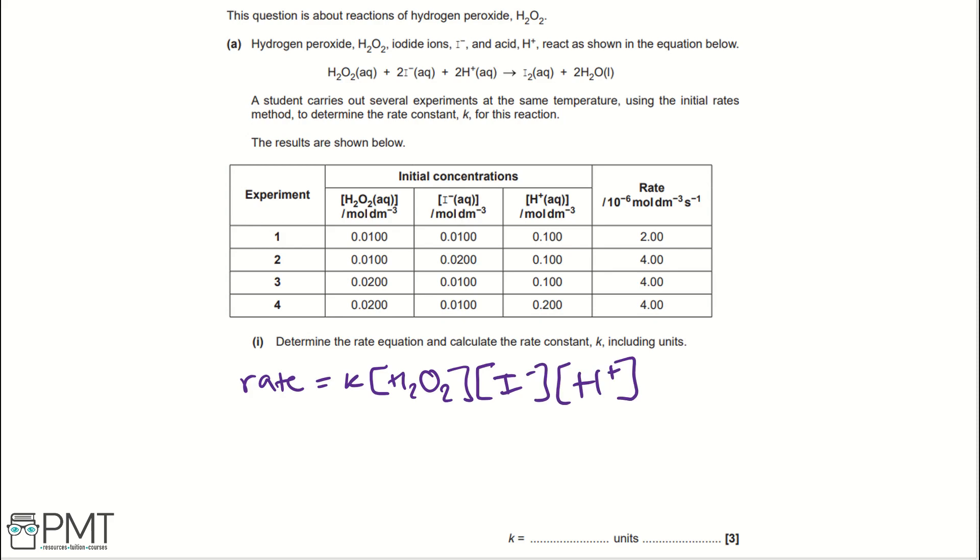We then need to establish which order each of these reactants are. To do this, we look for where one reactant has increased by a certain value and the others have stayed the same. Looking at experiments 1 and 2, I- has increased by a value of 2 and H2O2 and H+ have stayed the same. Then you look at rate. Rate increased by a value of times 2 as well.